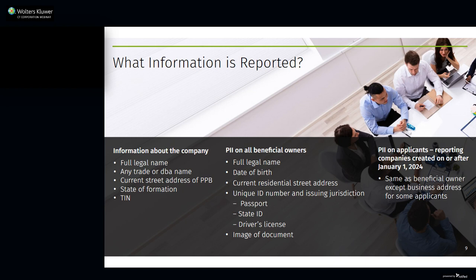For each individual beneficial owner, the initial report must set forth four pieces of information: the full legal name of the individual, date of birth, current residential street address, and a unique identifying number and the issuing jurisdiction from one of the following non-expired documents — a U.S. passport, an identification document issued by a state, local, or tribal government for the purpose of identifying the individual, a driver's license, or if the individual doesn't have any of those, a foreign passport. The report also has to include an image of the document from which the unique identifying number was obtained.